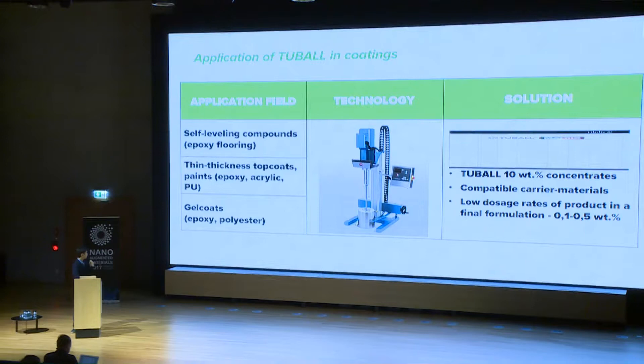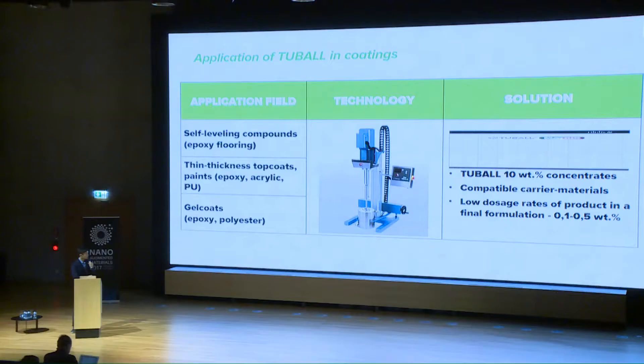In our research work last year, we covered the basic major coating types: self-leveling compounds, thin-thickness top coats, and gel coats. As all of these coating types share the same technology of formulating a compound using a mixer, we have created the line of products called Tubal Matrix for each of these applications. These concentrates contain pre-dispersed nanotubes that can help to easily incorporate Tubal into the system.